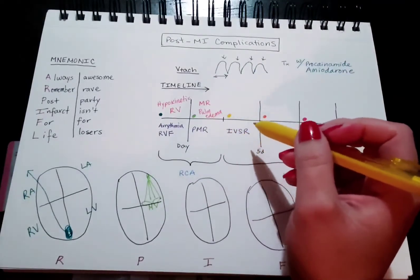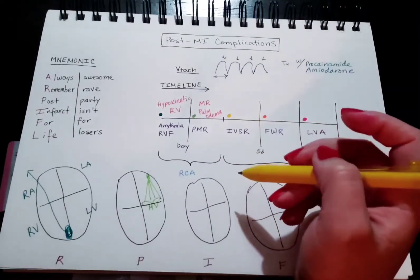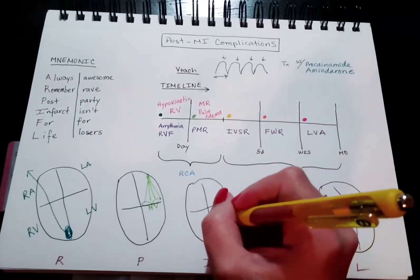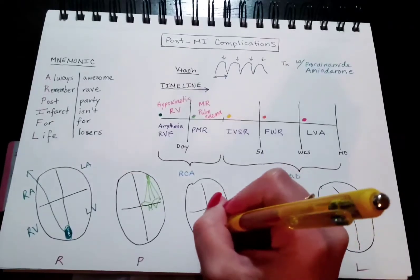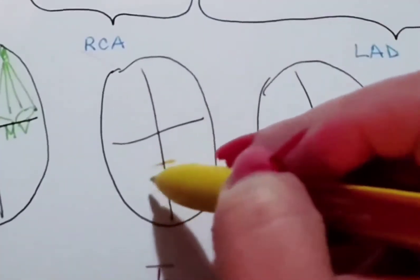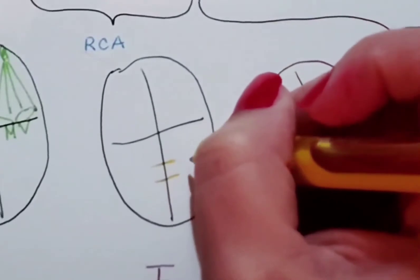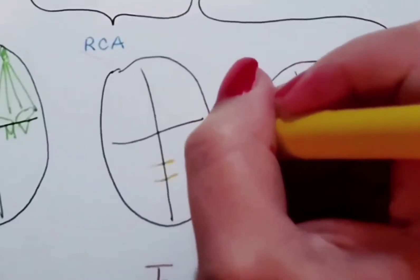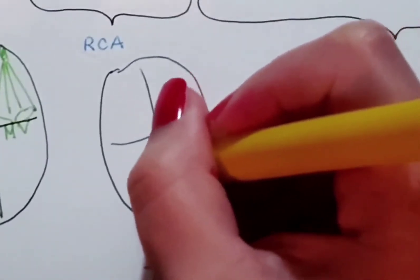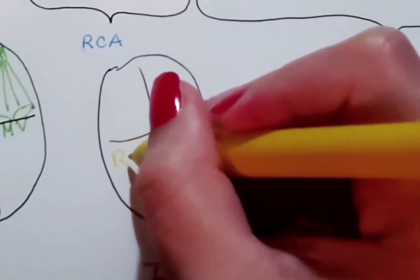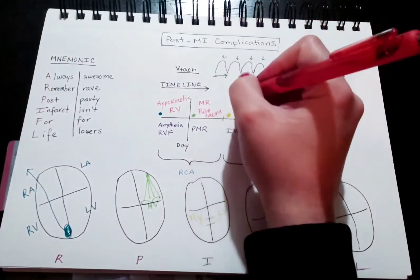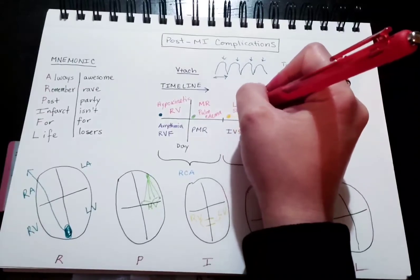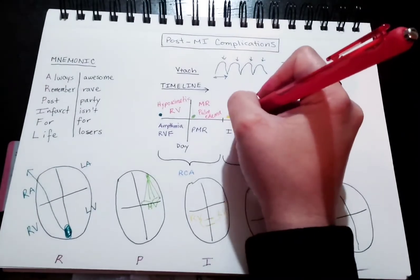In interventricular septal rupture, let's think about this. What does it sound like? Interventricular, between ventricles. Between ventricles, that septum has ruptured. So what do you think is going to happen? A shunt, right? Left ventricle is going to shunt to the right ventricle. What are we going to see? Left to right shunt. And this can also lead to shock, by the way.